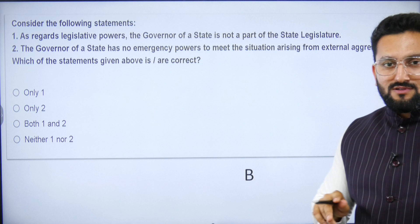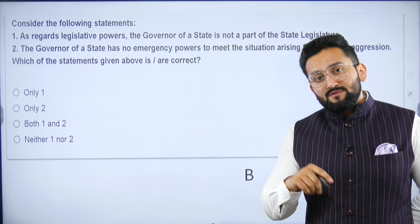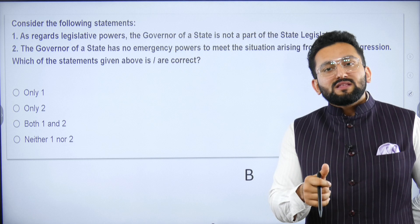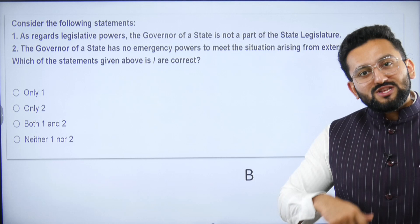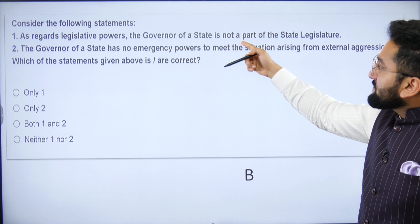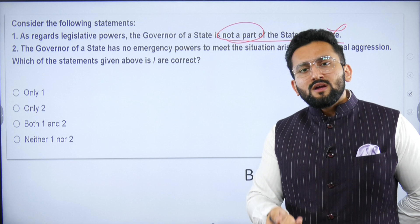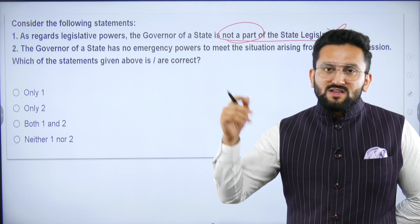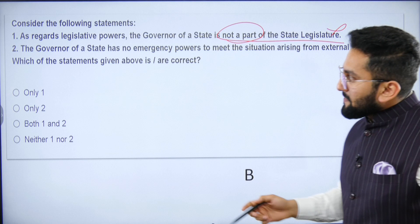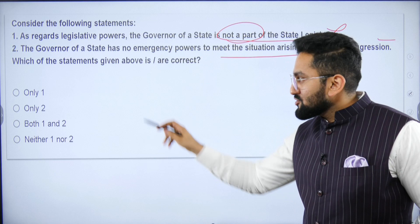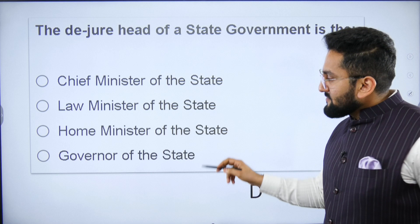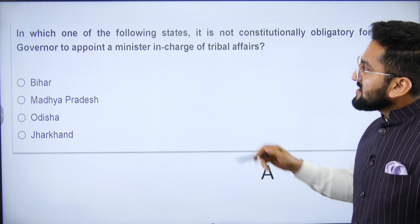If a governor of a state is appointed as administrator of a Union Territory, he shall exercise that function independent of the council of ministers. For example, the governor of Maharashtra as administrator of Lakshadweep does not need advice from Maharashtra's council of ministers for that role. Regarding legislative powers: the governor is indeed part of the state legislature — no bill can become an act without the governor's signature or presentation to the president. The governor has no emergency power to meet situations arising from external aggression.